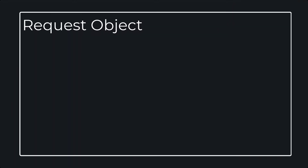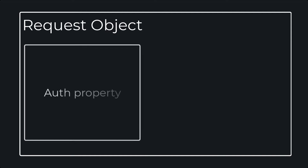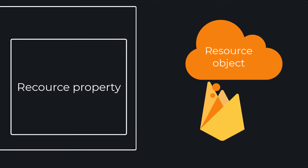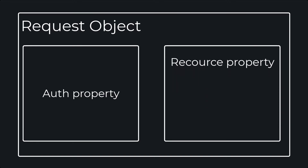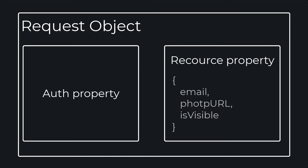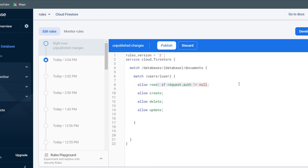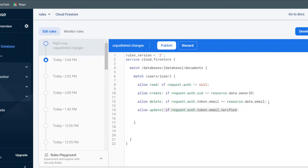The request object has two properties: the auth property and the resource property. This resource property — not to be confused with the resource object — contains the incoming data. For example, if we wanted to create a user, the details of that user would be on the resource property. The auth property is based on whether we used authentication. If so, we can check if the user is signed in, if their UID matches the document's ID, or if their email has been verified.